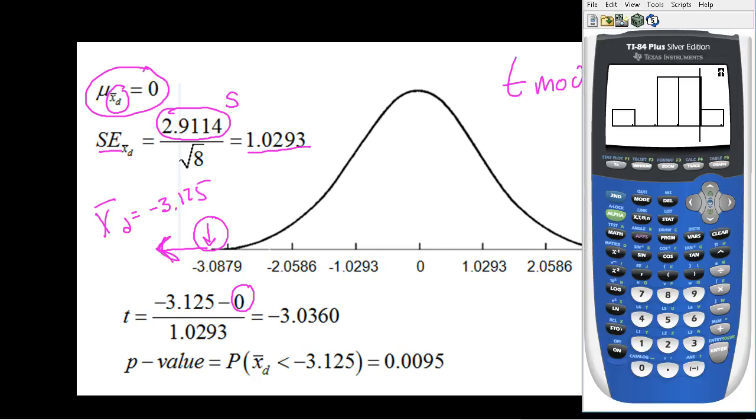I then need to find my P value, which is the probability of my sample happening or more extreme, which in this case would be even lower. To do that, you need TCDF. So I'm going to go and choose TCDF. Second vars TCDF is number six. Now I want to look below. So I'm going to start at negative 99. And I'm going to go to an upper value of my T score, negative 3.0360. And I have seven degrees of freedom. Sample size 8, 8 minus 1 is 7. And that's where I got a P value of 0.0095.